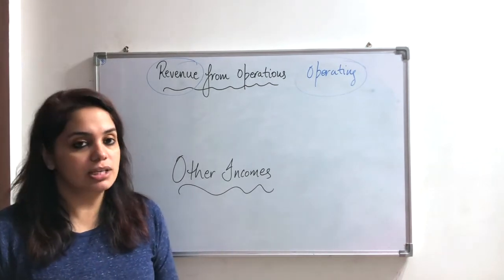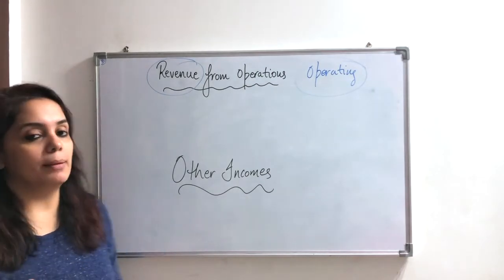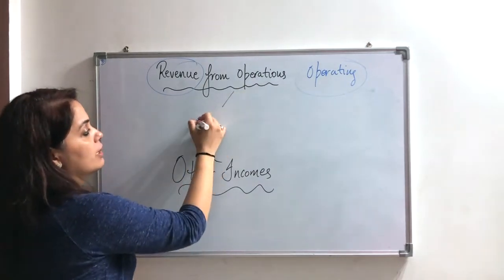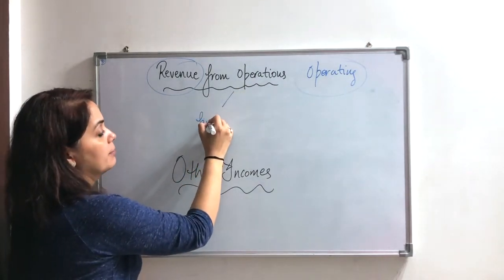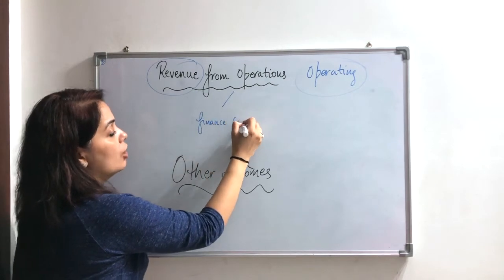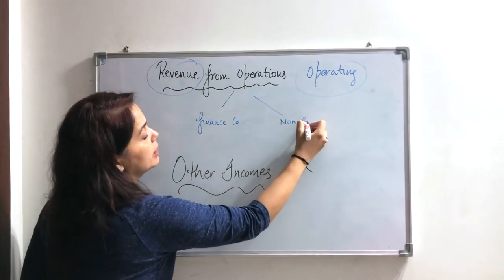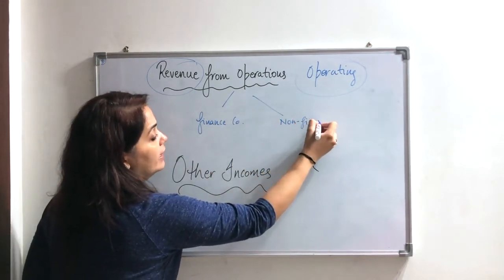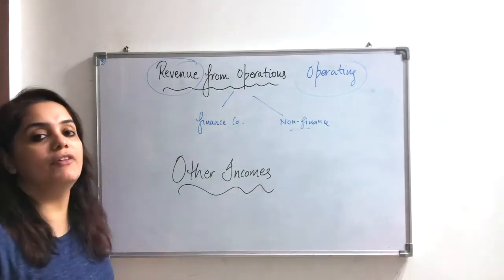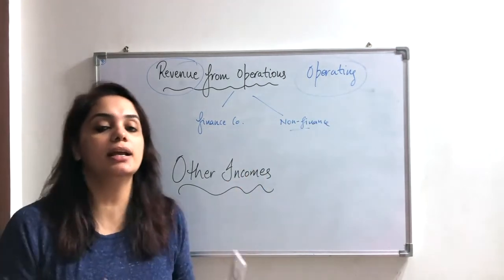To explain this in detail, there are two types of companies. One company is a finance company and another one is a non-finance company. Non-finance companies we call manufacturing companies and trading companies.